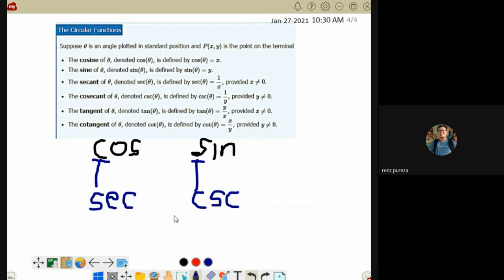You won't easily forget that. The reciprocals have opposite letters. You might get confused if you think the reciprocal of cosine is C, cosecant, which is wrong. The reciprocal of cosine is S, secant. The reciprocal of sine is C, cosecant.